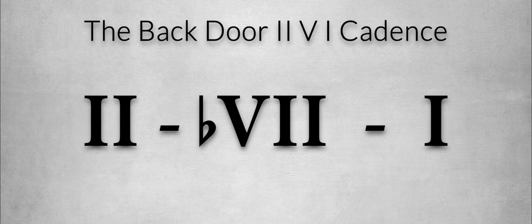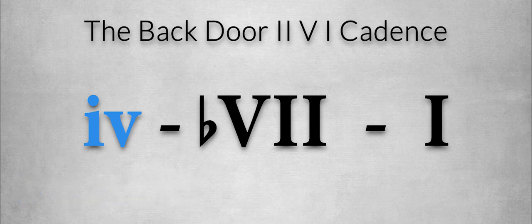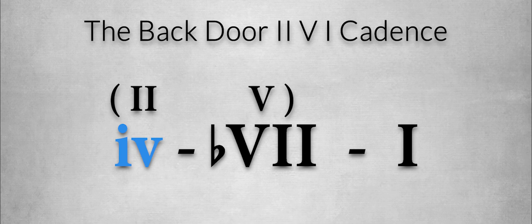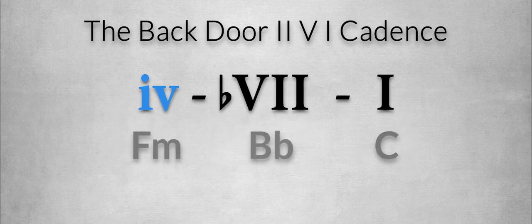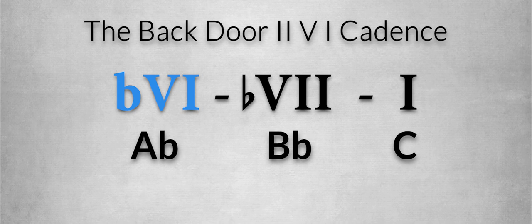There's also a backdoor 2-5-1 cadence. In this cadence, the 2 chord is replaced by a popular minor 4th degree, which is also a subdominant and a very common replacement of the major 4th degree in a major key. The backdoor 2-5-1 now becomes a minor 4-flat-7-1 progression, and the minor 4 and flat 7 chord have a 2-5 relationship, like F minor to Bb. A variation is created when we substitute the minor 4th degree for its relative major chord — in this case, Ab major is the relative major chord of F minor — making the cadence Ab, Bb, C.